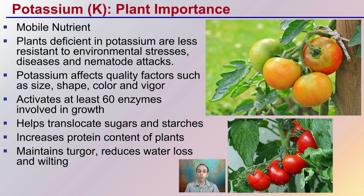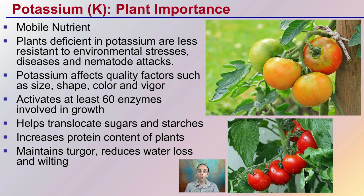In addition, potassium can affect qualities such as shape, color, vigor, and the size of the actual tomatoes. It can cause yellow shouldering. It activates up to 60 enzymes involved with growth, helps translocate sugars and starches within the plant, increases protein content, maintains turgor pressure — that's water pressure — and reduces water loss and wilting. So you can see this is involved in a lot of things.